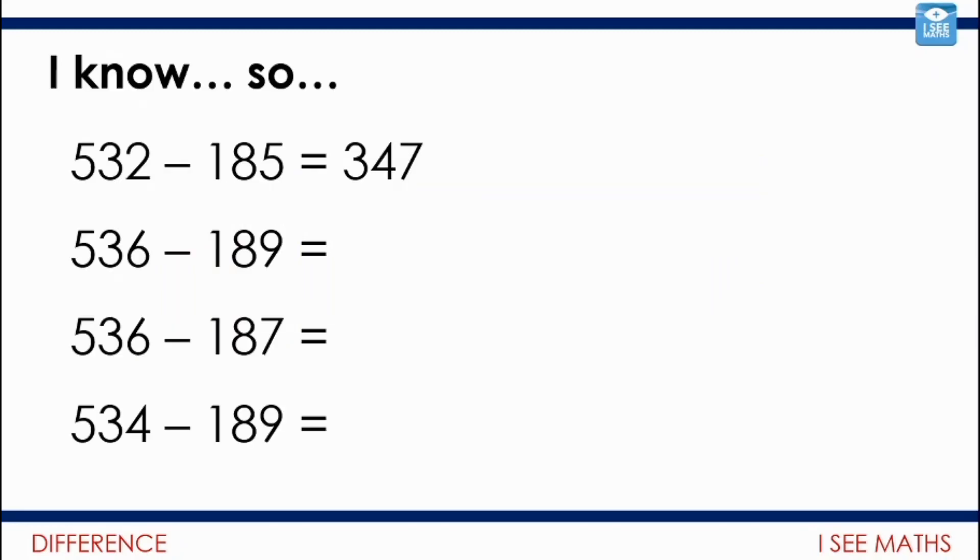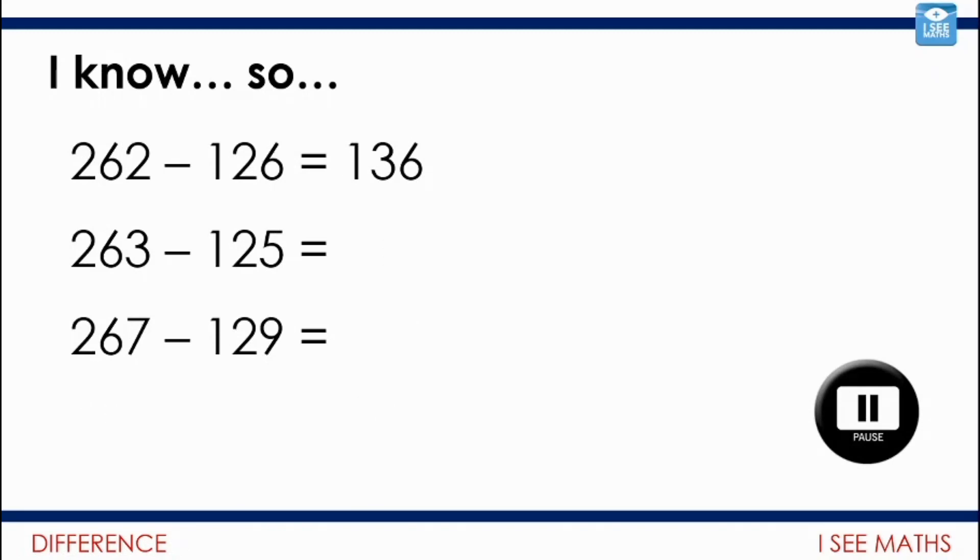So I wonder if you can use this understanding when we're coming to do some calculations. Let me show you just a few more examples. 532 subtract 189 equals 347. 536 is 4 more. 189 is 4 more. So the answer well it'll just be the same. 536 subtract 187. So I'm subtracting 2 less. So the answer well it'll be 2 more. 349. And 534 well that's 2 less. And I'm subtracting 2 more. So overall the answer will be 4 less. 345.